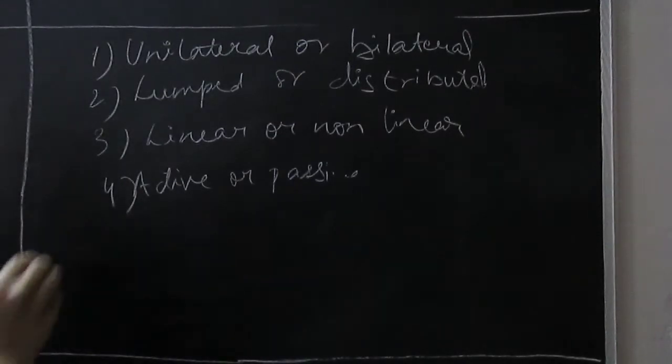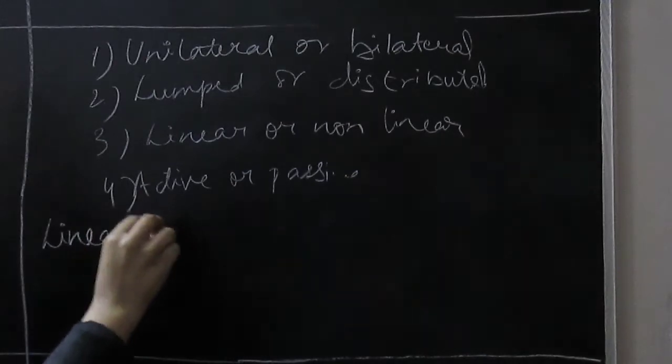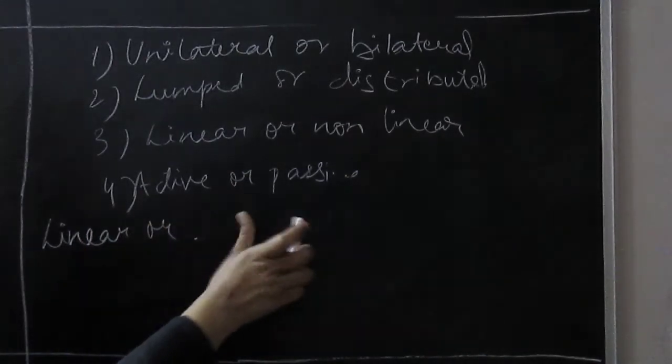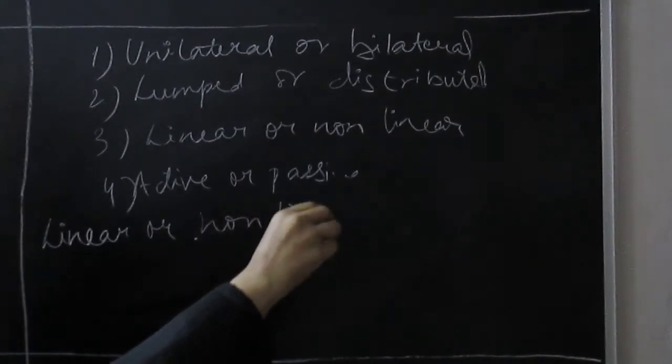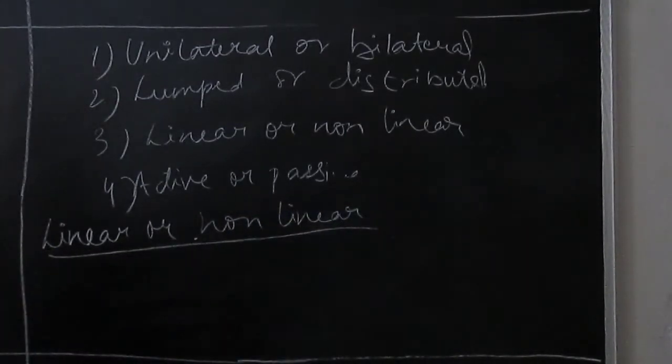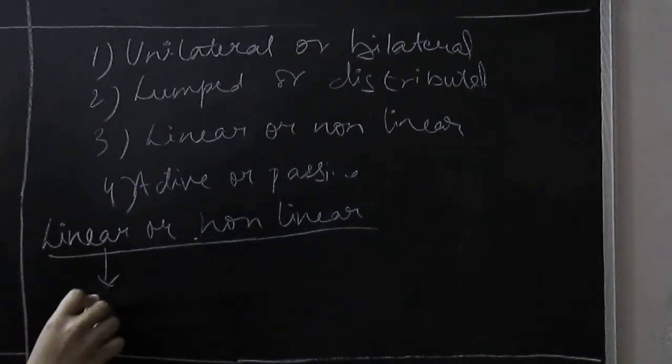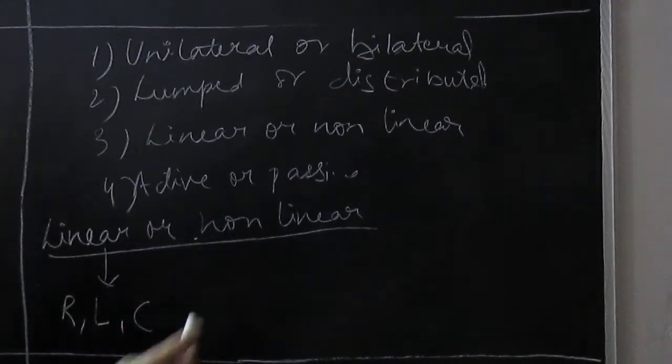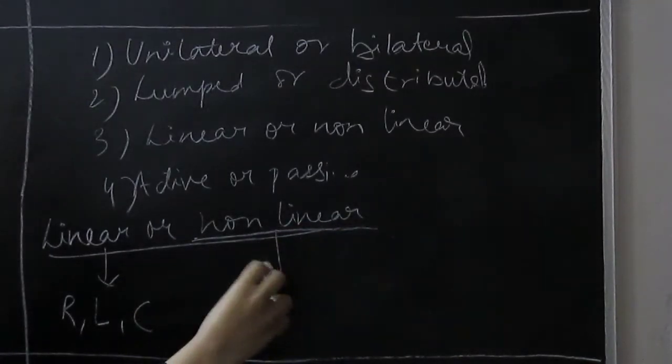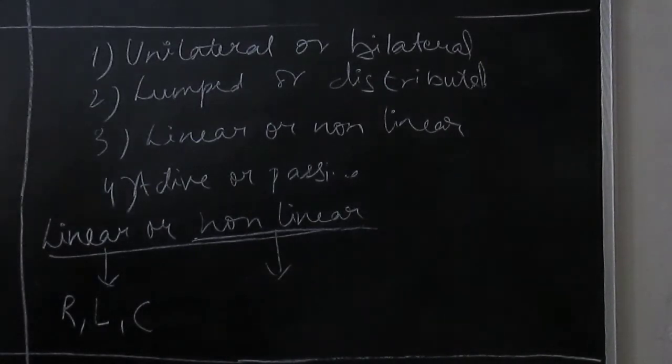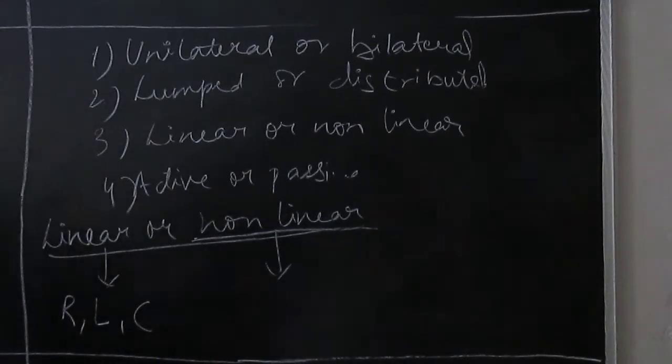Linear and non-linear. Linear circuit elements have voltage and current relationship that is linear, for example, a resistor, inductor, or capacitor. But where our current and voltage relationship will be non-linear, that means if it is not power 1, then we will call it non-linear circuit elements. For example, semiconductors where there is never a linear relationship between current and voltage.